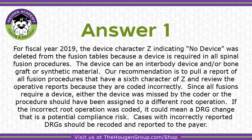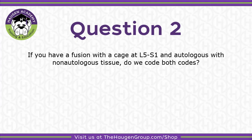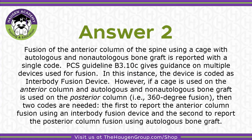Cases with incorrectly reported DRGs should be recoded and reported to the payer. If you have a fusion with a cage at L5 to S1 with autologous and non-autologous tissue, do we code both codes? Fusion of the anterior column of the spine using a cage with autologous and non-autologous bone graft is reported with a single code. PCS guideline B3.10C gives guidance on multiple devices used for fusion.